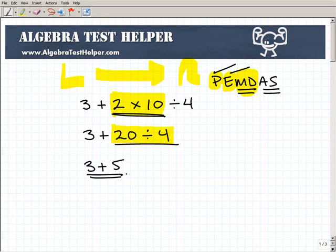And then obviously there's nothing else to do other than add these two numbers, 3 plus 5, and that is 8. So pretty basic example of the order of operations.